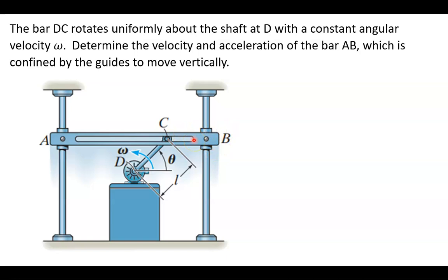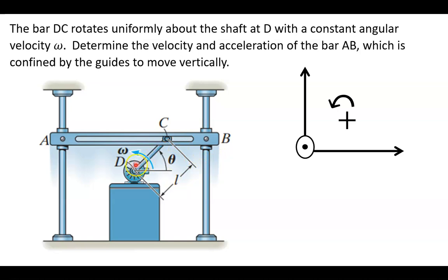Let's set up our coordinate system. We're going to say that going up is positive, going counterclockwise is positive, and going to the right is positive. What we're also dealing with is this relationship between the rotational motion of shaft DC with length L and the vertical translational linear motion going up and down of bar AB. These two are directly related.